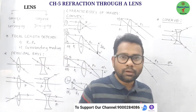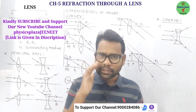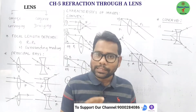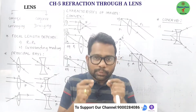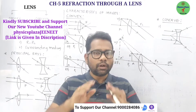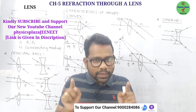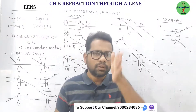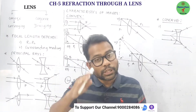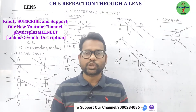We revise the concepts of refraction through a lens. A lens is a transparent refracting medium bounded by either one or two spherical surfaces — sometimes one surface may be plain and the other spherical.